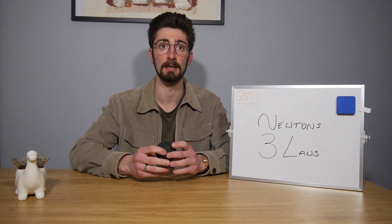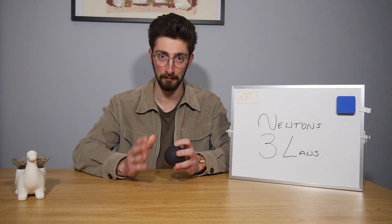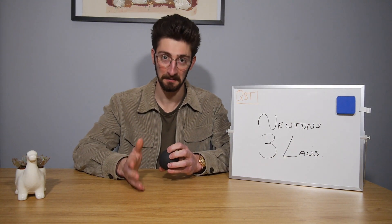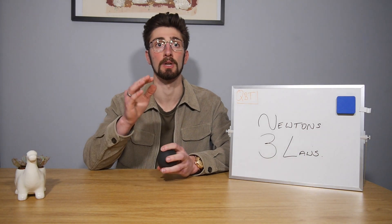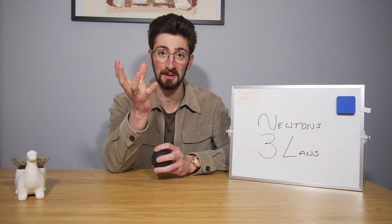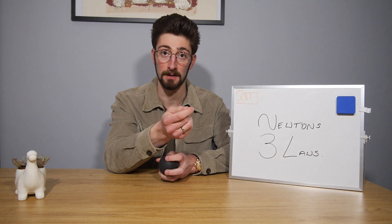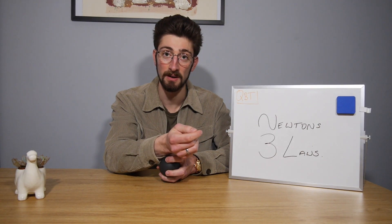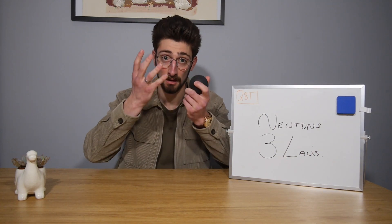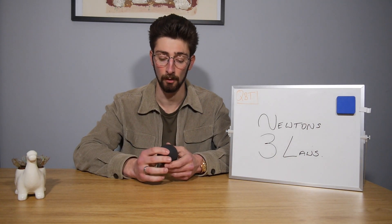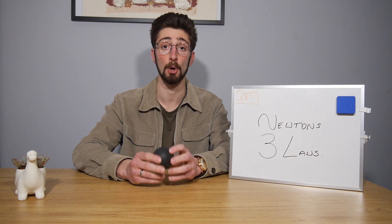A good way to think about this is how two objects will fall at the same rate in a vacuum, because there's no air resistance. You can look it up online and see that a bowling ball falls at the same rate as a feather in a vacuum, because there's no resultant force on those objects — they're both subject to weight due to gravity. That's Newton's first law.